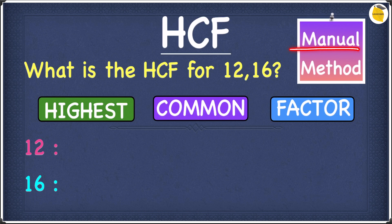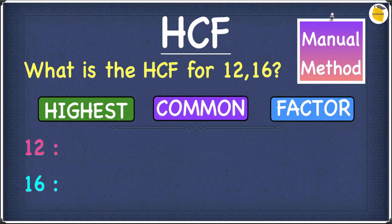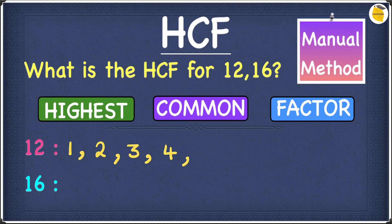We're going to solve this using the manual method. HCF stands for the highest common factor, so we're going to first find the factors for 12 and 16. Factors are numbers that go into a number exactly without leaving any remainders. The factors of 12 are: 1, 2, 3, 4, 6, and 12.